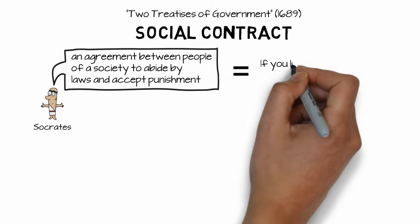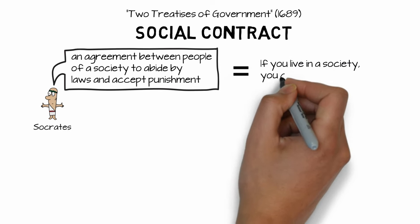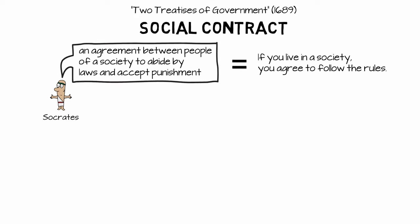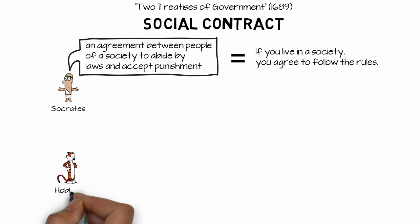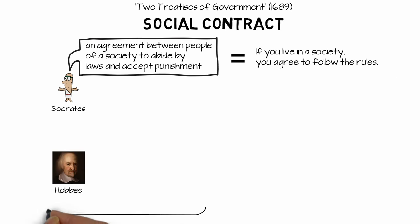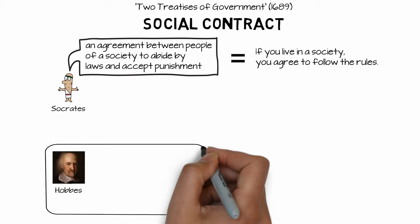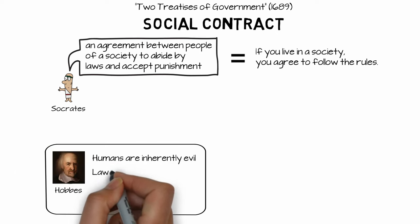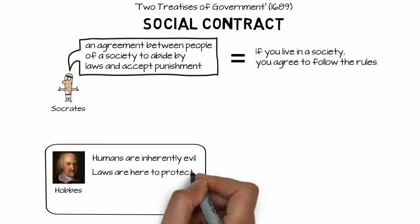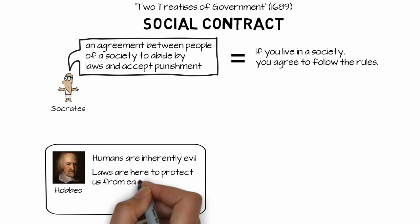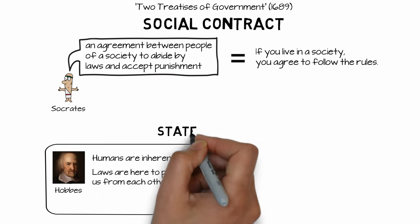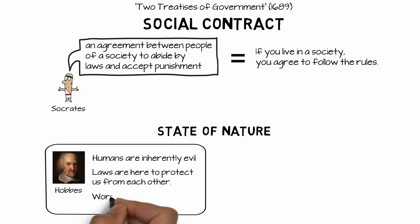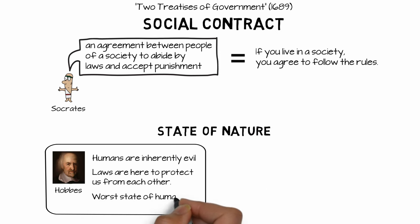Basically, if you live in a society, you agree to follow the rules. But why should people join a society in the first place? Why wouldn't they live on their own? Philosopher Thomas Hobbes believed humans were evil in their natural state, and that society, government, and laws existed because humans needed them for protection. This concept was called the state of nature, and Hobbes believed it was the worst possible outcome imaginable.